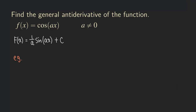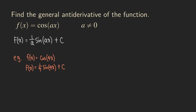Here's one example. Say our function is cosine of 4x. The antiderivative is sine of 4x — don't change the argument — and we multiply by the reciprocal of 4, which is 1 over 4, then add the constant C. Isn't that simple?